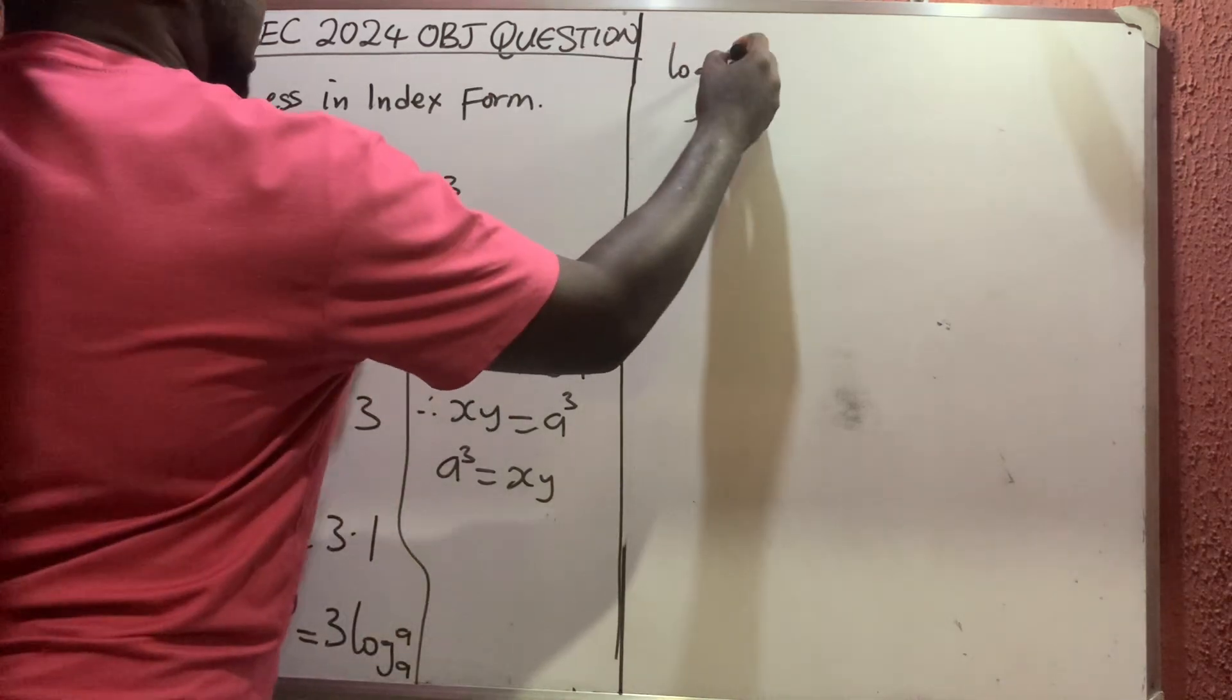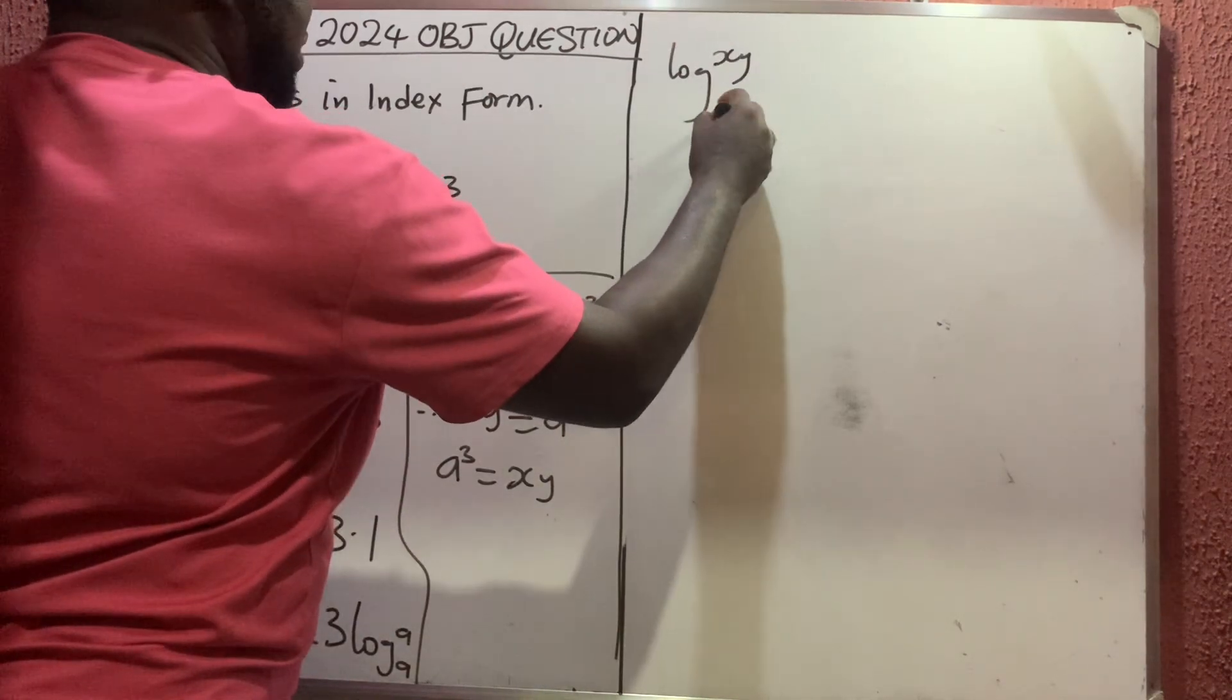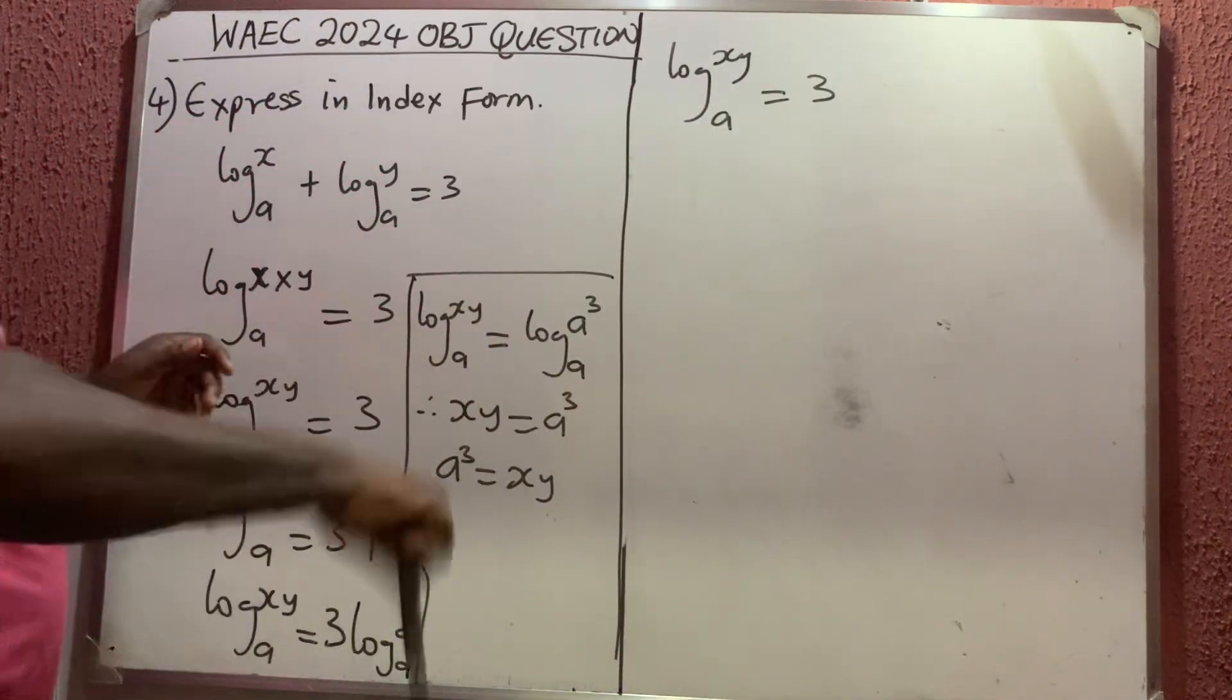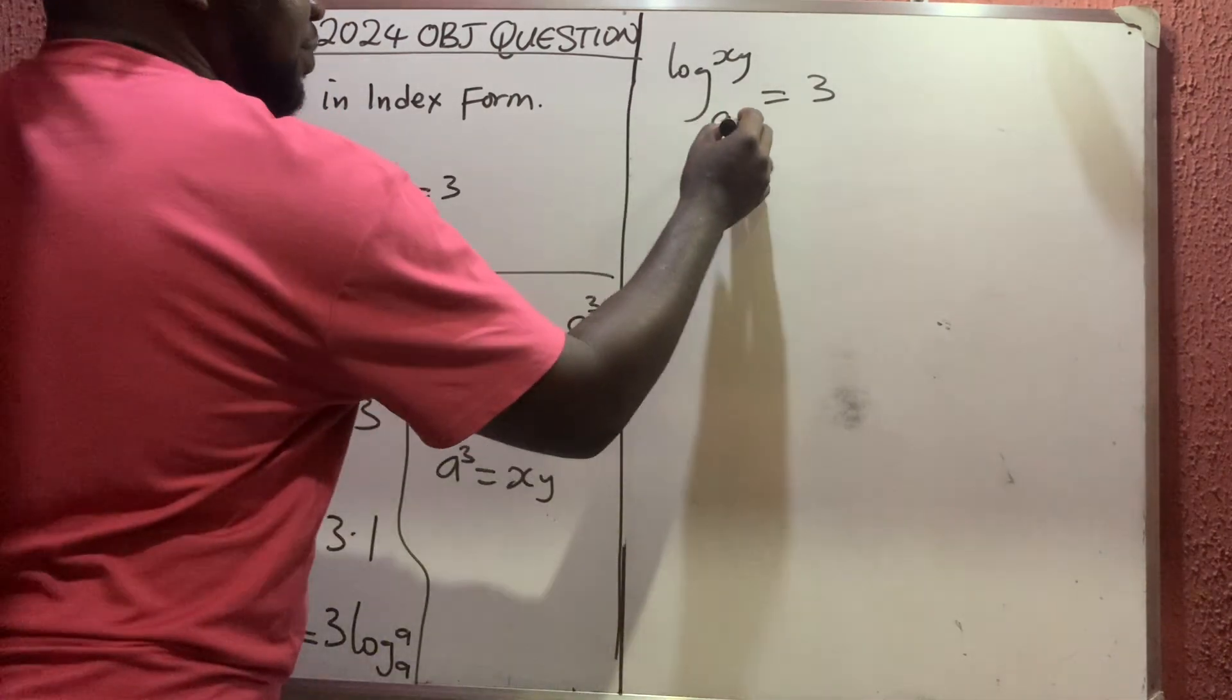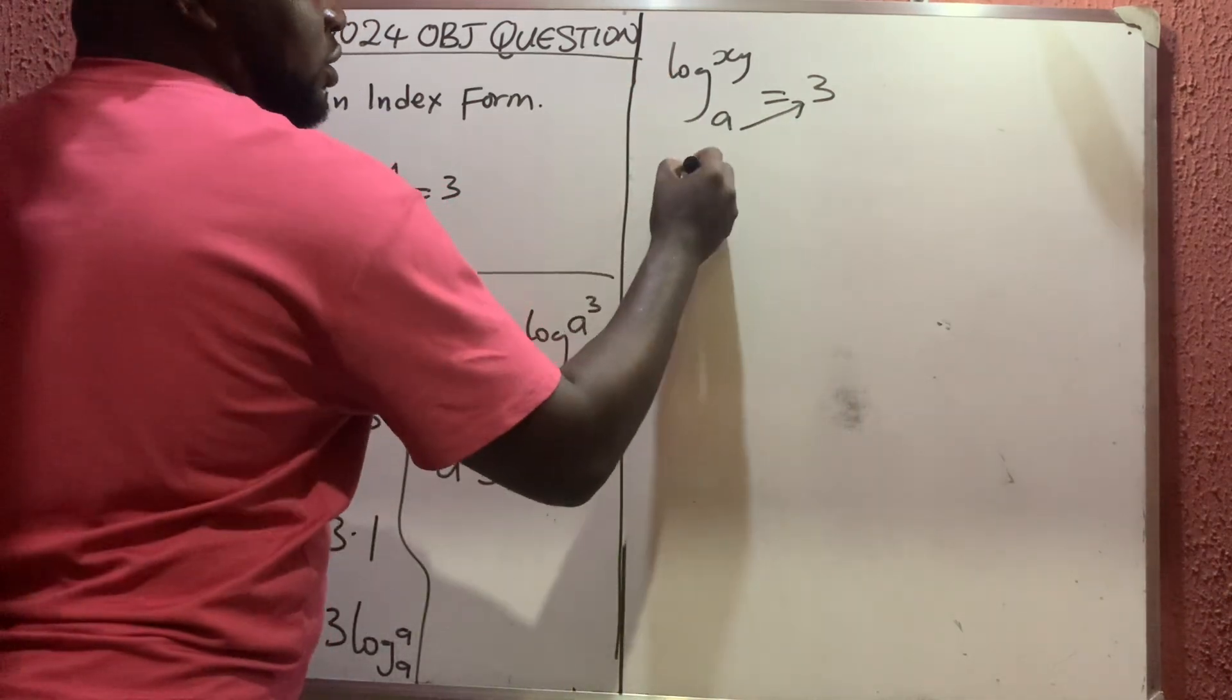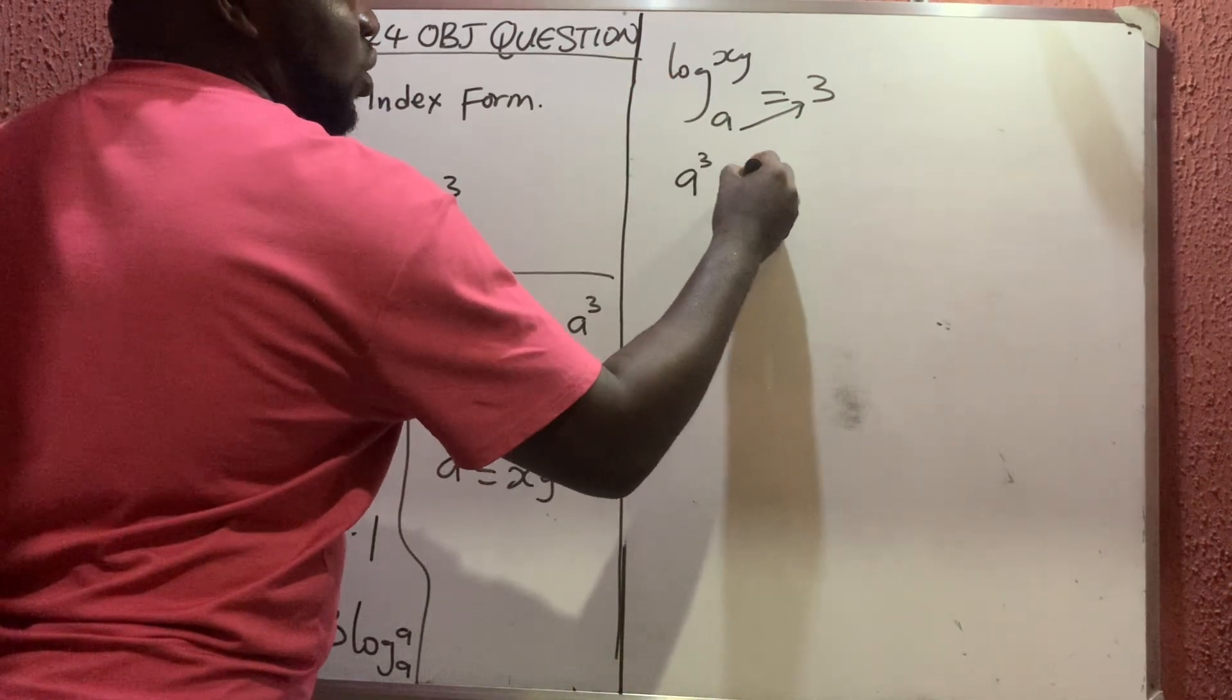Now whenever you want to remove log, what you just have to do is simply let this go and carry this there. You have removed the log. So a raised to power 3 will now equal xy. That is the easiest way to remove log.